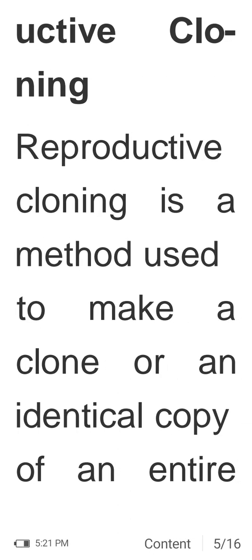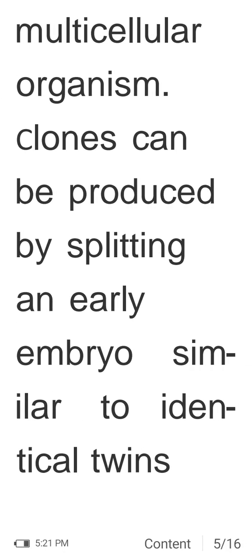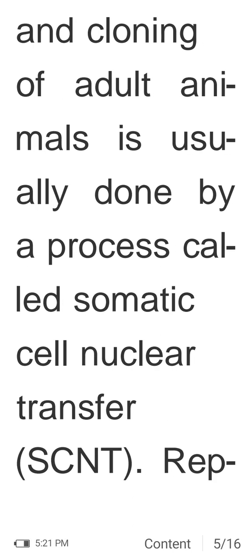Reproductive cloning is a method used to make a clone — an identical copy of an entire multicellular organism. Clones can be produced by splitting an early embryo, similar to identical twins. Cloning of adult animals is usually done by a process called somatic cell nuclear transfer (SCNT).